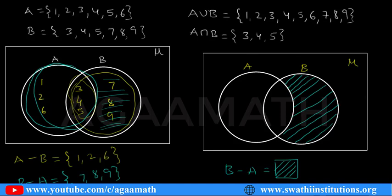This is the basic thing we are learning. When elements are given we represent and shade like this; when there is no element this is the way to represent. In this video we learned A union B, A intersection B, A minus B, and B minus A in Venn diagrams. We have a few more representations like subsets — those will be learned in the next video. I hope you all understood. Thank you, see you, bye-bye.